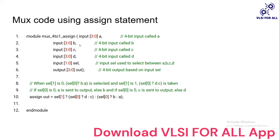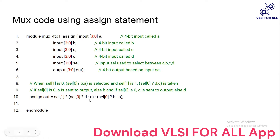The four inputs A, B, C, D are each 4-bit wide and their direction is input. The select line is 2-bit. The output is a single 4-bit output. Using the assign keyword, the output is assigned based on select[1] and select[0] using a conditional operator — the question mark and colon — which is the ternary operator. This conditional operator describes the multiplexer behavior.